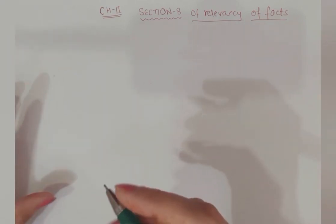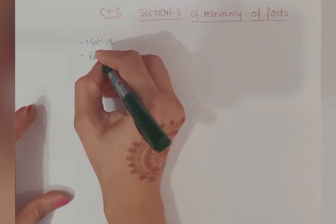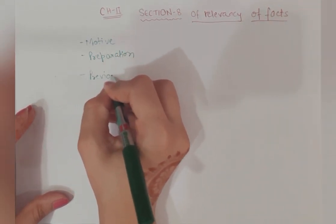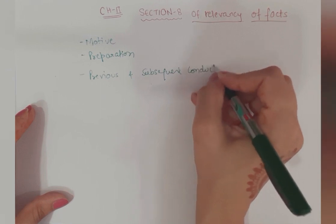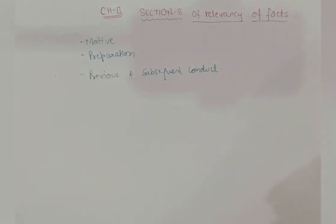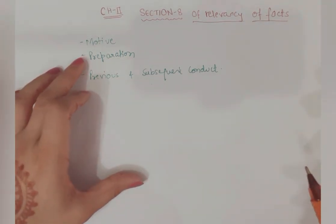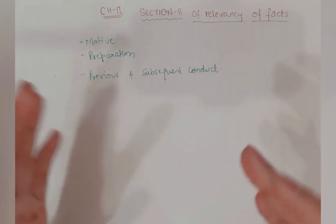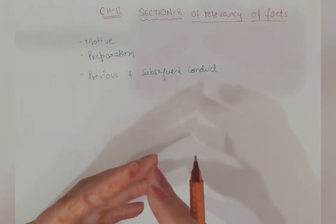Section 8 talks about motive, preparation, and previous and subsequent conduct. These are the following things which we are going to cover under Section 8. It says that any fact which prepares motive, or which is related to preparation, or which talks about previous and subsequent conduct, that is related to any fact in issue automatically becomes the relevant one.